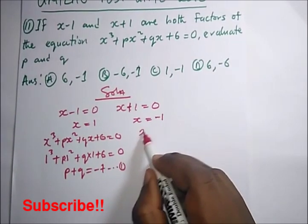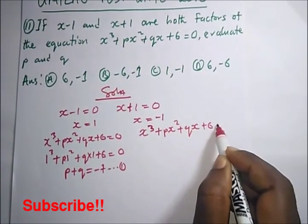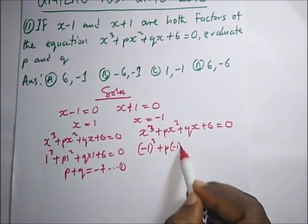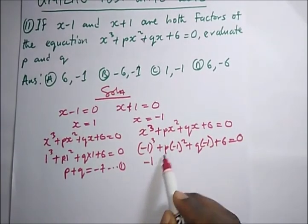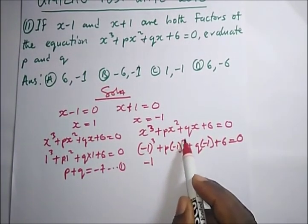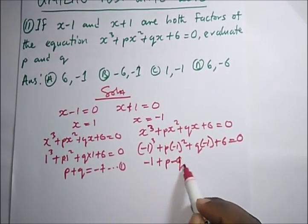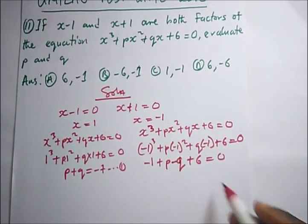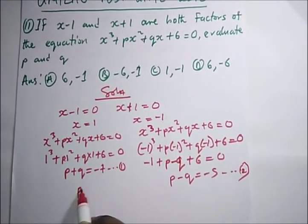Now substituting x = −1 into the same equation: (−1)³ + P(−1)² + Q(−1) + 6 = 0. This gives −1 + P − Q + 6 = 0, so P − Q + 5 = 0. Taking +5 to the other side gives P − Q = −5. This is equation two.